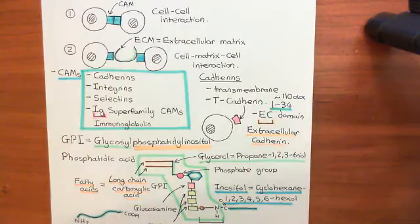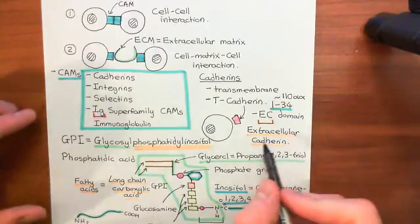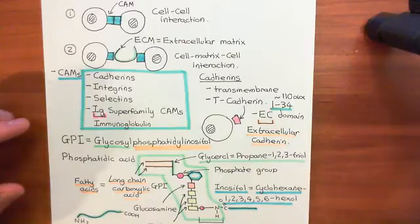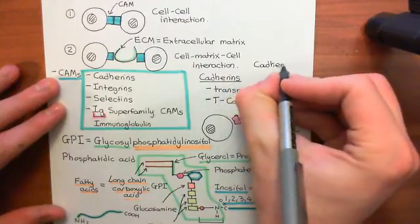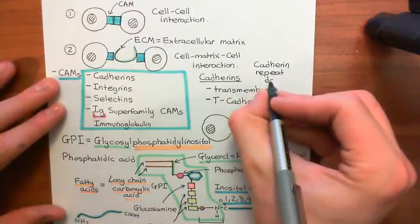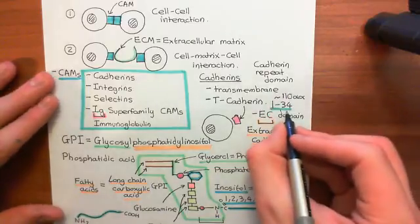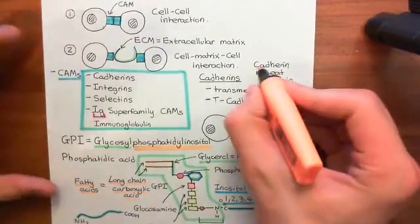Welcome back to this next video in which we are discussing the catherin superfamily of cell adhesion molecules. We've now seen the basic property that all catherin proteins have, which is that they have a special domain at least once in their extracellular domain. This special domain is known as an extracellular catherin domain, also known as a catherin repeat domain. It's called a catherin repeat domain because some of these catherin proteins repeat this domain multiple times — some of them have up to 34 of them in their extracellular domain.